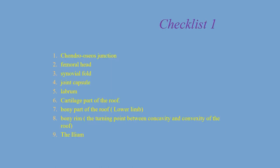To further standardize things, Professor Graf introduced two checklists: Checklist 1 and Checklist 2. Checklist 1 contains 9 important structures that we need to identify in every image to consider it suitable for diagnosis. These 9 structures are: the chondro-osseous border, femoral head, synovial fold, joint capsule, labrum, the cartilaginous part of the roof, the bony part of the roof, the bony rim — which is the turning point between concavity and convexity of the roof — and the ilium.